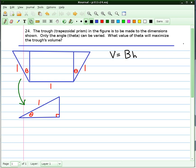We're working on optimization problems in calculus, and this problem here presents a challenge, geometrically at least. It states, the trough, which happens to be a trapezoidal prism, in the figure is to be made to the dimensions shown. Only the angle theta can be varied. What value of theta will maximize the trough's volume?